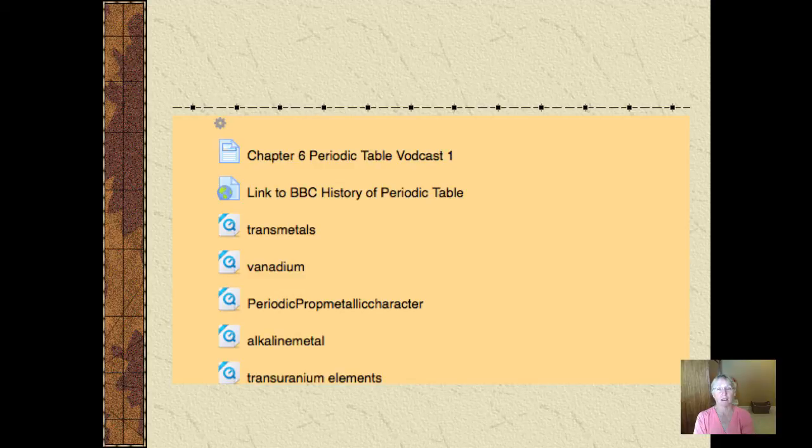Our new periodic table that we're going to examine now, refined by Mosley and others, is a periodic table where elements are arranged in order of increasing atomic number. Now you might want to return back to this slide later on in the vodcast. I'll be asking you to watch videos about the transition elements or alkaline metals.